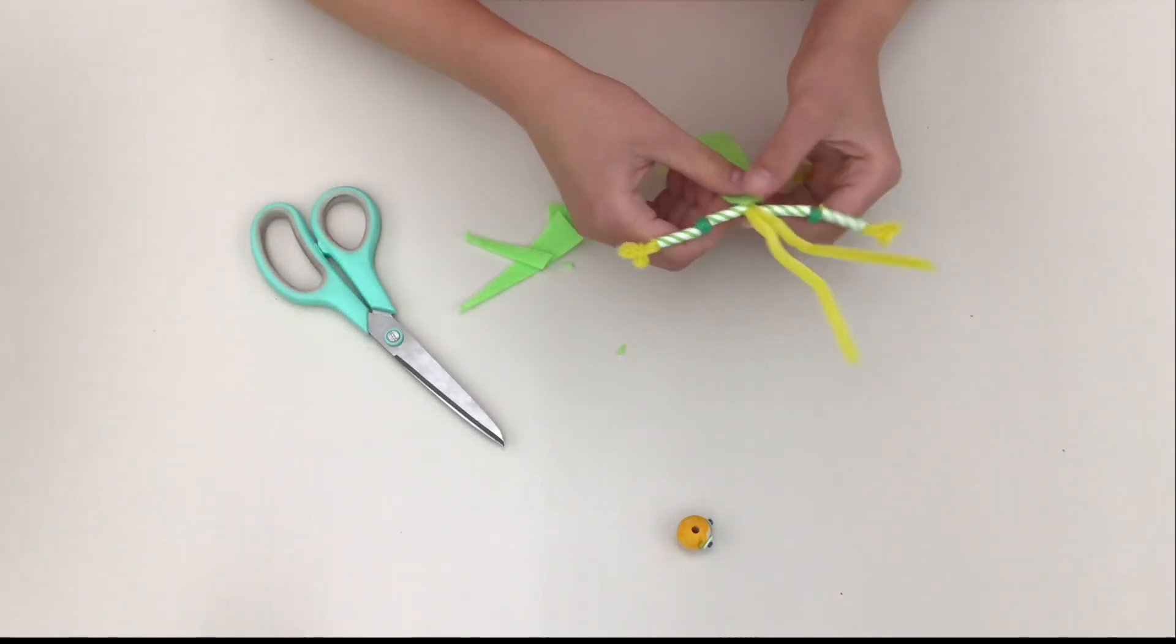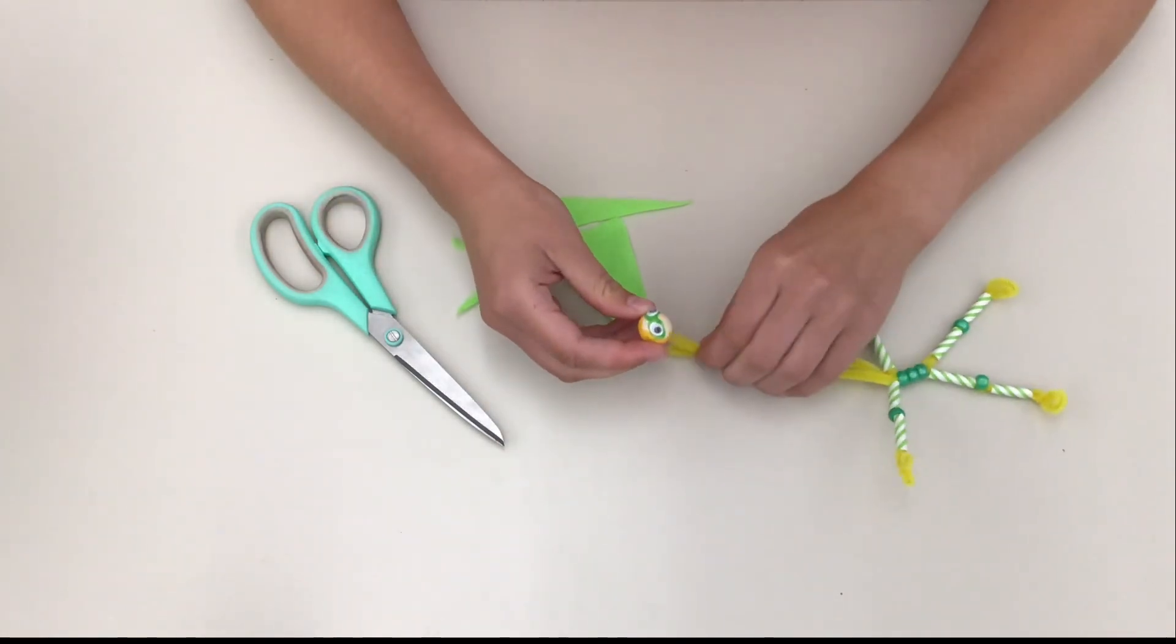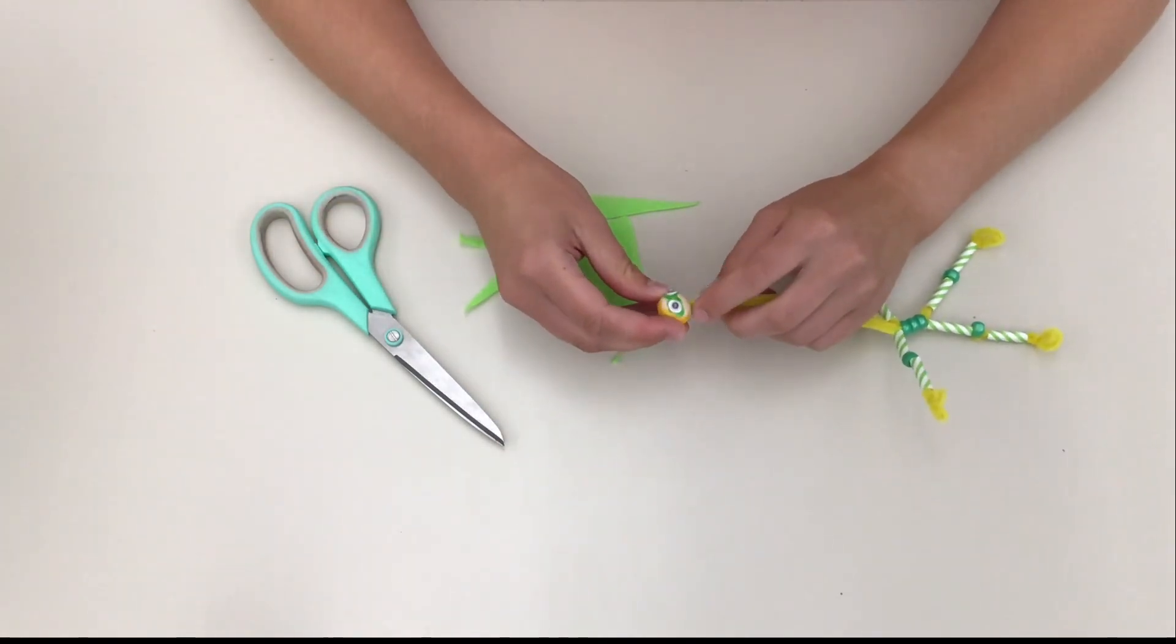Later we're going to glue the cape on right here at the base of the neck, but you can set it to the side for now. Grab your head and slide it on. We're going to work on the neck now.